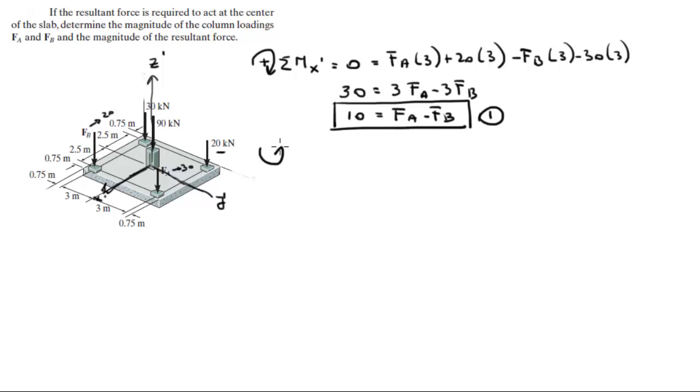So for the Y, assuming counterclockwise is positive, sum of the moments in the Y is equal to zero. Let's call it Y', remember it's not the original Y axis, and the moments are equal to FA times 2.5 plus FB times 2.5 minus 30 times 2.5 minus 20 times 2.5.